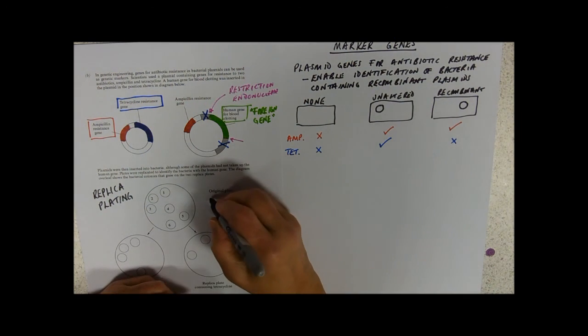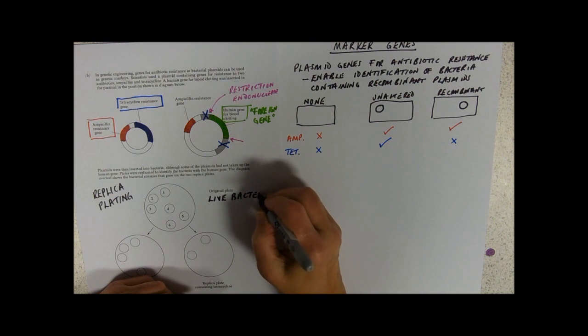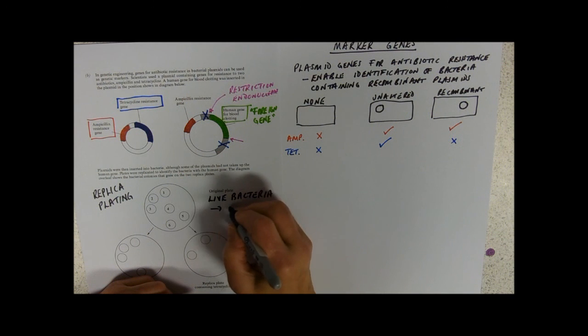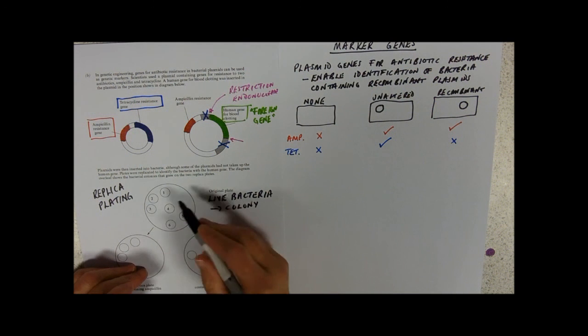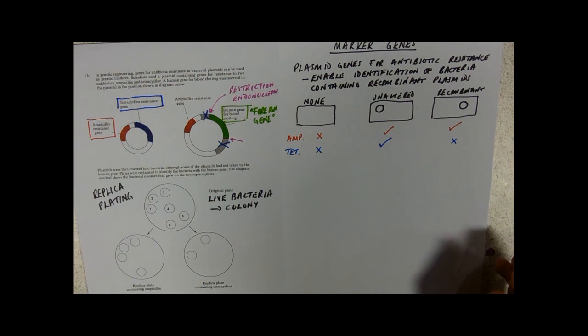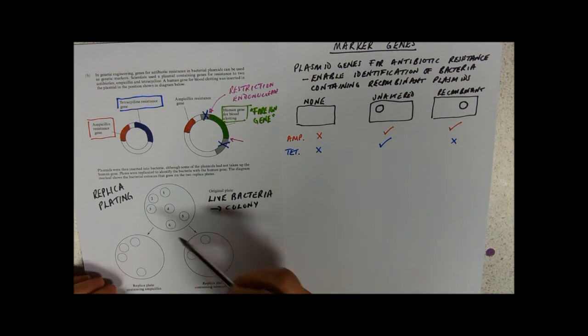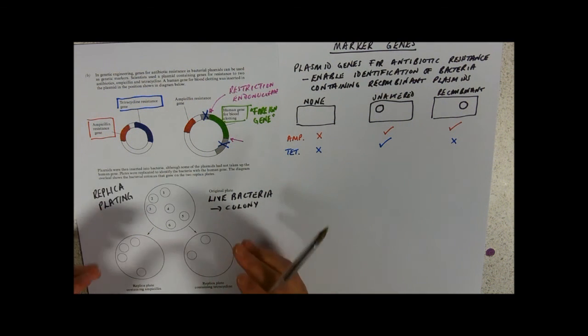So you get all of your bacteria and you plate them out on agar. And live bacteria make little circular colonies. So these are all the bacteria that are alive. And you have to do other things. And when we do component one, microbiology, you'll realise we have to do dilutions to get them to spread out enough so that one bacteria makes one colony. So we've got six live bacteria on this plate and each one has given rise to a colony.